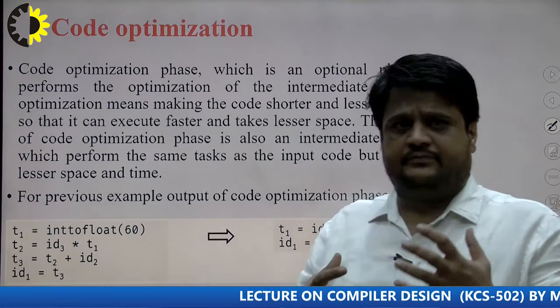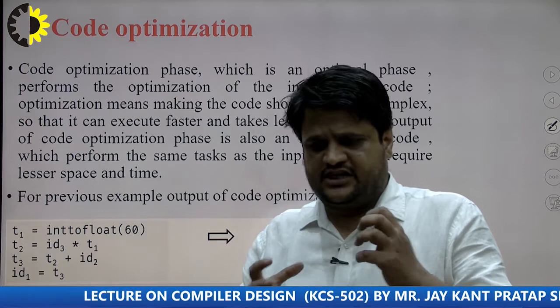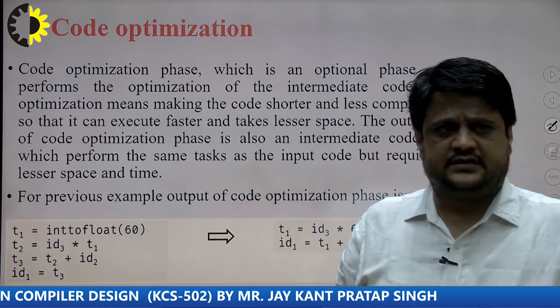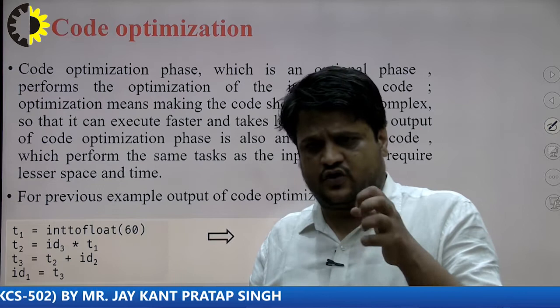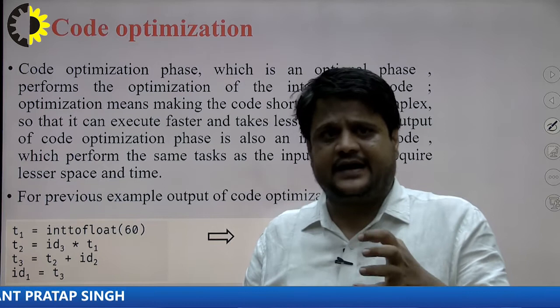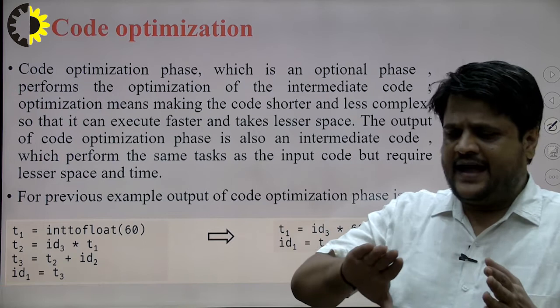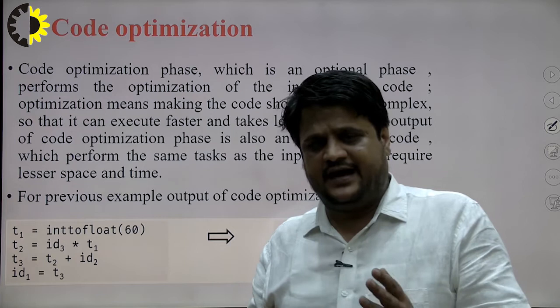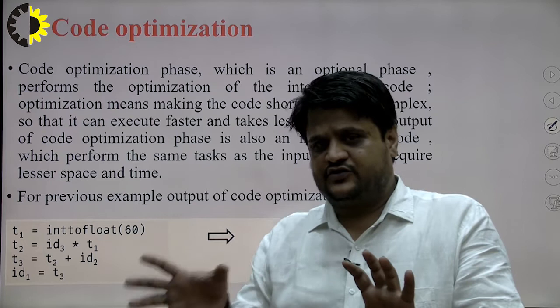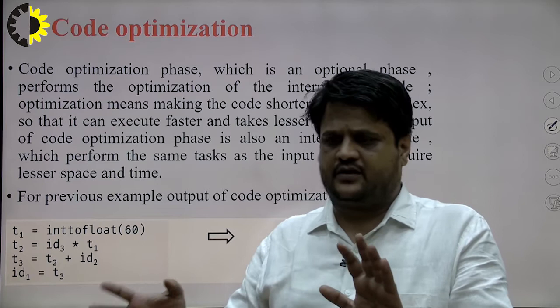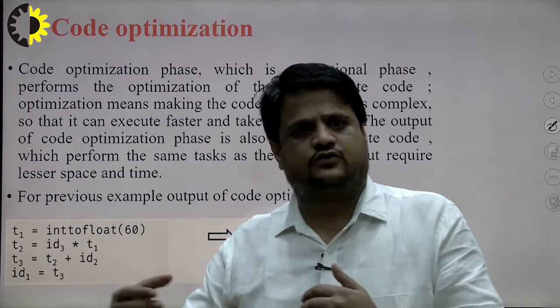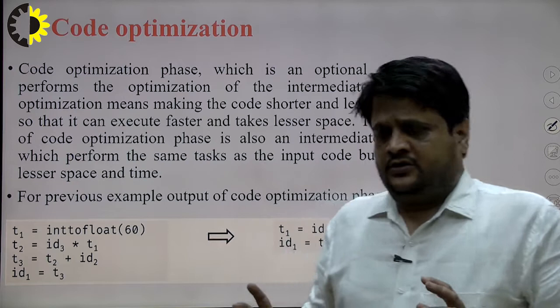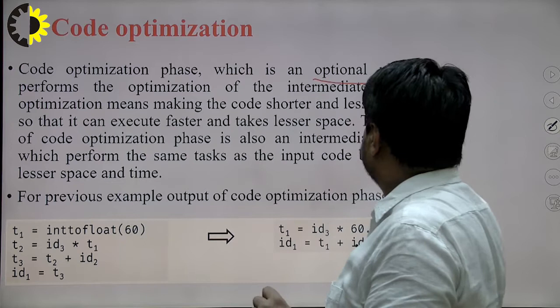In the code optimization phase, we optimize the code in terms of space as well as time. We can reduce the size, make the code shorter and less complex so it executes faster and takes less memory. The main intention of the code optimization phase is that the output never changes after performing optimization. The output generated by the intermediate code is also generated by the optimized intermediate code — both generate the same output. Due to this, it is also called an optional phase.